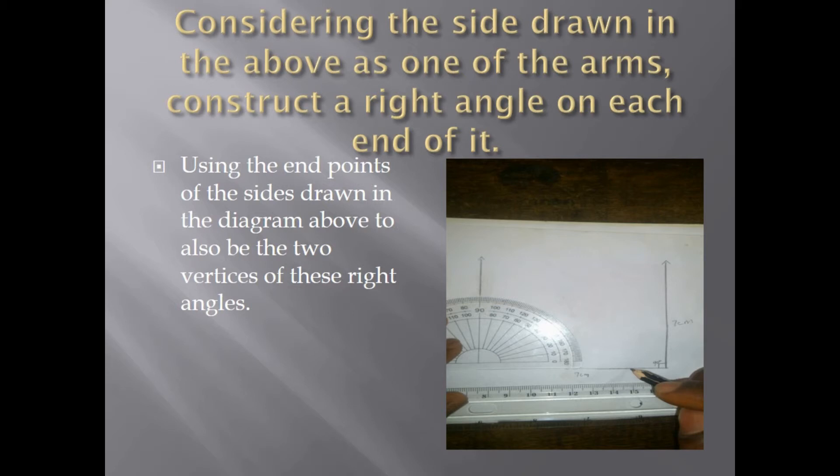The protractor placed will enable you to get a right angle, that is, angle 90 degrees.